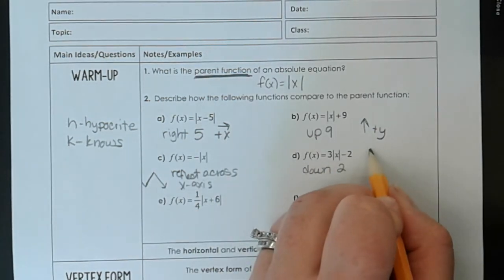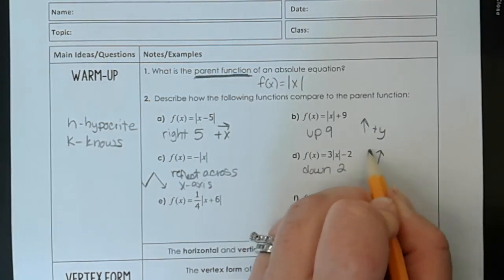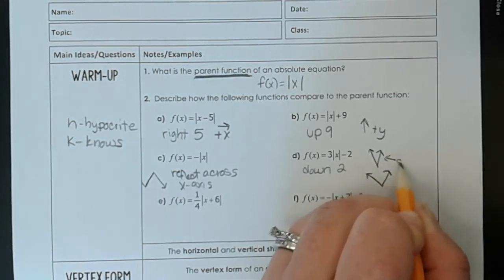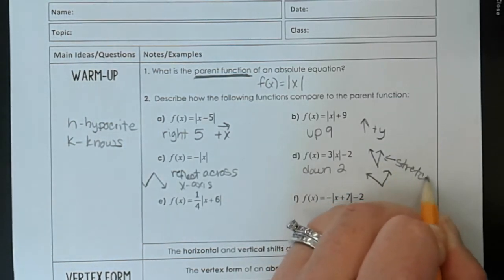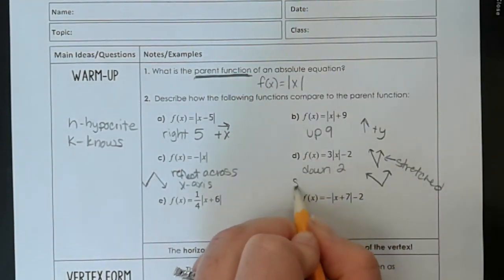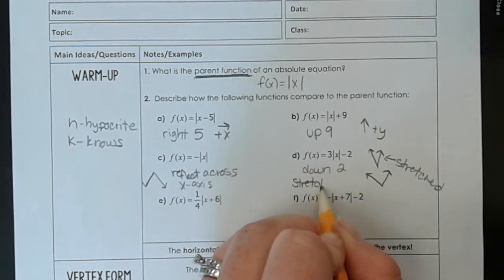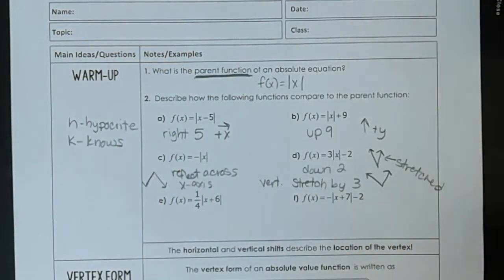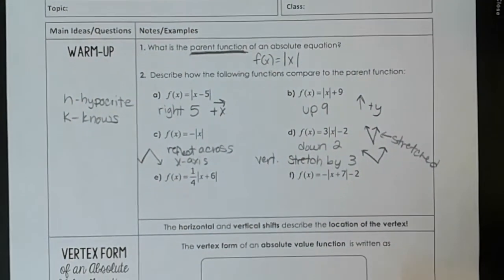And then this out here, this gives us a vertical stretch. A vertical stretch gives us one that looks more like this instead of one that looks like this. So this is stretched. So this one's going to give us a vertical stretch by 3.